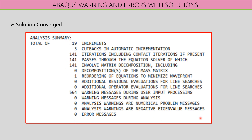This is an example of an Abaqus summary found in the message file. You need to check three parameters: warning messages encountered during the run, numerical problems, eigenvalues, and any errors that exist. We'll discuss one by one how to overcome these warnings and errors if they exist in your model.